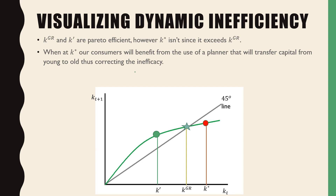You can see that we have K prime, which isn't K golden rule — it's actually behind it. But it is a Pareto efficient allocation because the dynamics of the economy will pull it towards K golden rule. In that case, we would not really benefit from a planner, since that is a Pareto optimal allocation.